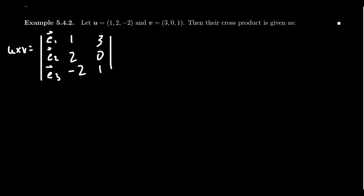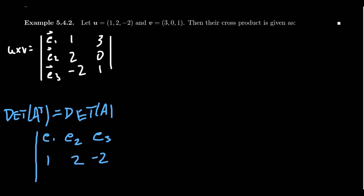Now I want to mention that when it comes to the determinant, the determinant of the transpose is the same thing. Taking a transpose doesn't affect the determinant. So when people work with this, sometimes instead of writing them as columns, people prefer to write this as rows. You have the row vectors E₁, E₂, E₃, then you write u as a row (1, 2, -2) and v as a row (3, 0, 1).